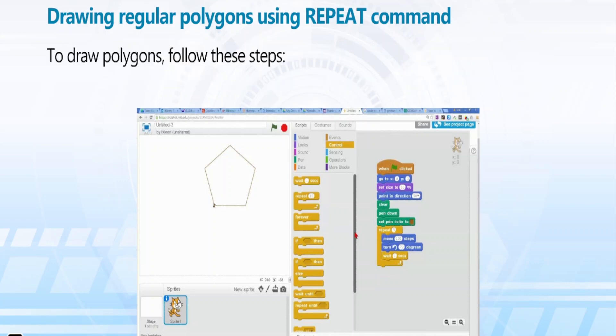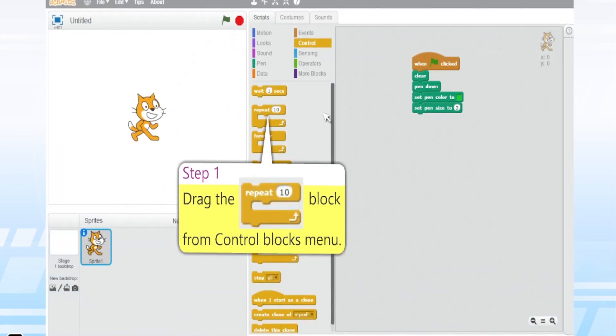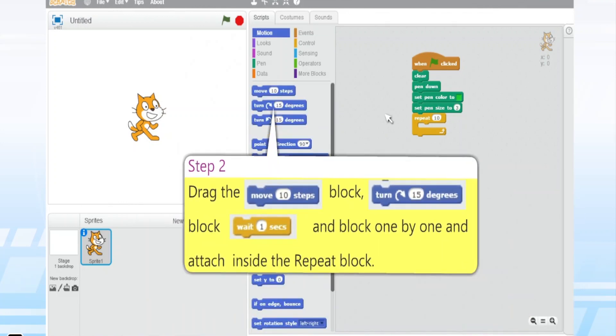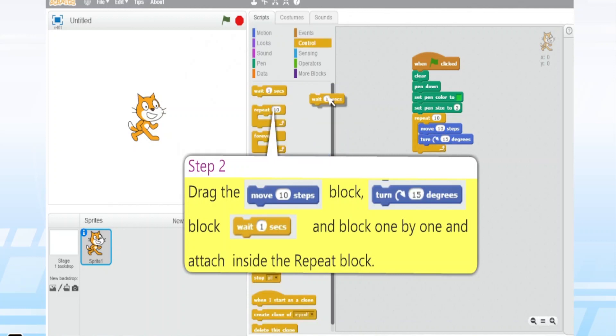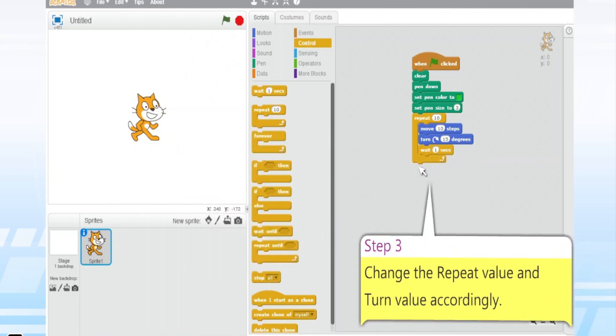To draw polygons, follow these steps. Step 1: Drag the repeat 10 block from control blocks menu. Step 2: Drag the move 10 steps block, turn clockwise 15 degrees block, and wait 1 seconds block one by one and attach inside the repeat block. Step 3: Change the repeat value and turn value accordingly.